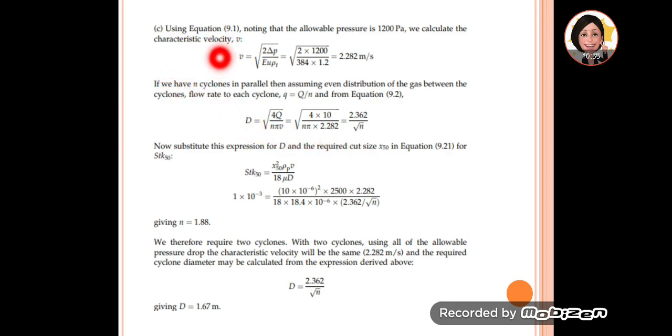To determine the diameter and number of cyclones, we start with the Euler equation. We have the Euler number, the fluid density, and the pressure drop, so we get the characteristic velocity.